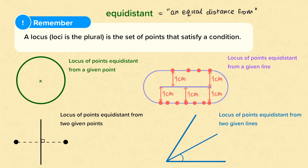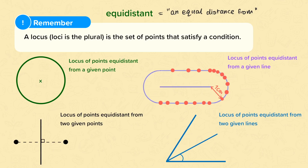At the end of the lines is where things get tricky. At the end of the line, these points will all be a centimetre away from the end of the line. So that's why you end up with these semicircles at each end.